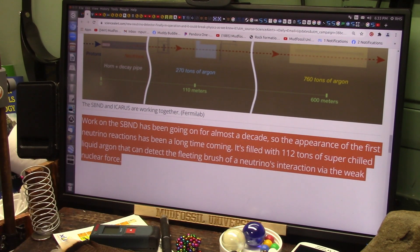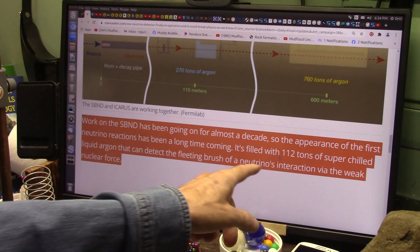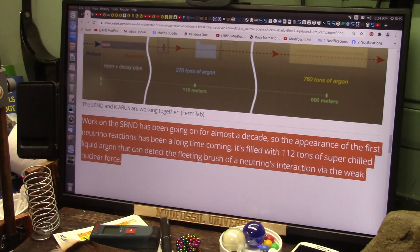So the appearance of the first neutrino reactions has been a long time coming? No, it was a long time ago. It's filled with 112 tons of super chilled liquid argon - that can't be cheap.